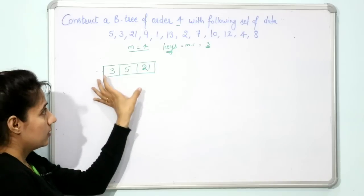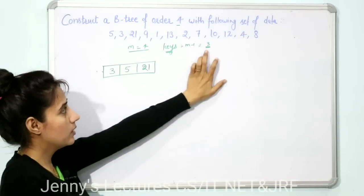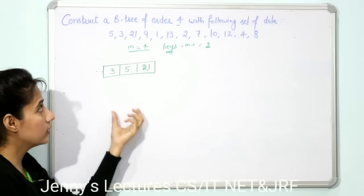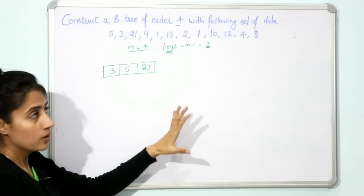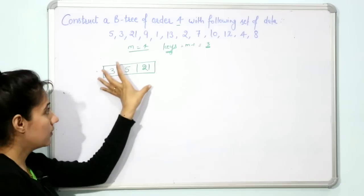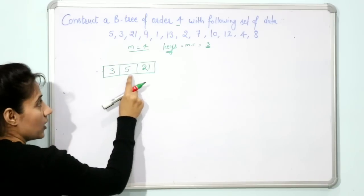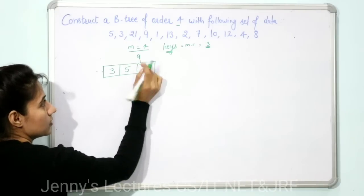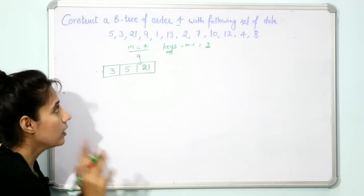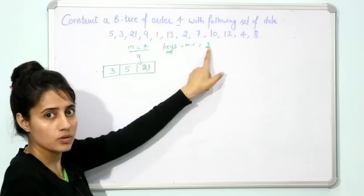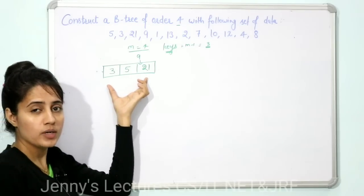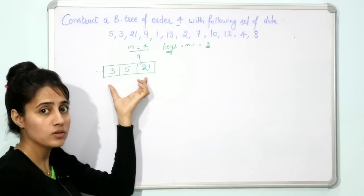Next is 9. The node is already full because the maximum we can insert is only 3 keys. First we find the proper place to insert 9: it goes after 5 and before 21. So tentatively the node would be [3, 5, 9, 21], but now we have 4 keys in this node, which exceeds the maximum of 3. So this node must be split into two parts.